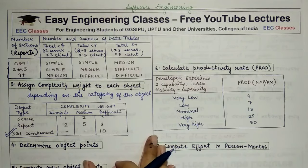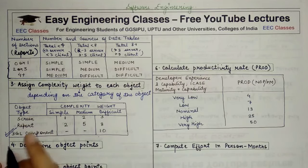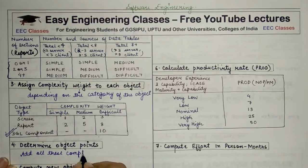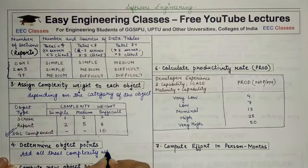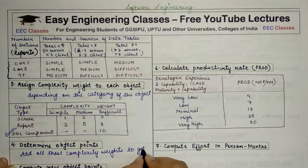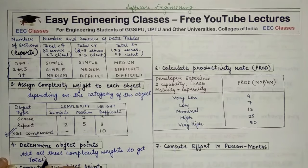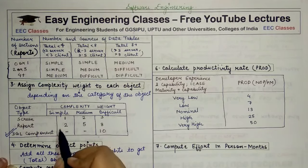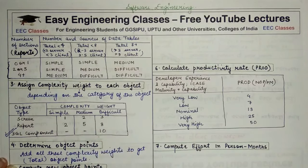Once you have found all your complexity weights, the next step is to add all these complexity weights together to get a single value — this gives you the total object points. For example, if you have calculated that a screen is medium (value 2) and a report is simple (value 2), then 2 plus 2 equals 4, which is the object points value. That is how object points are calculated.